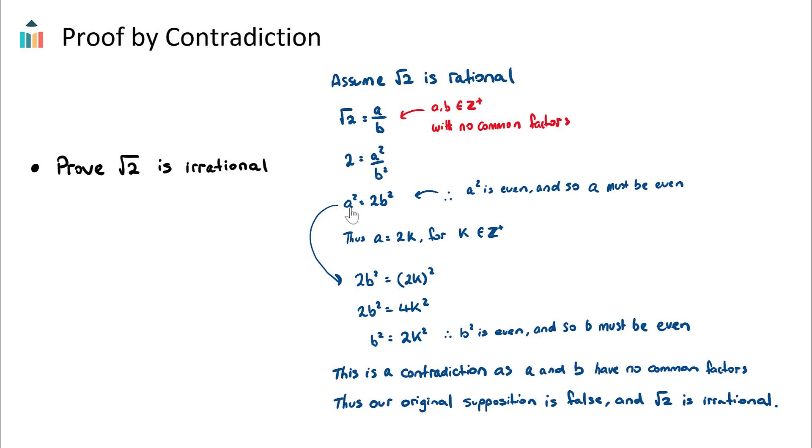So if we know that a is even we can say that a = 2k. Now I've just introduced k here as a variable, but if k is any positive integer, well 2k will represent any even number.